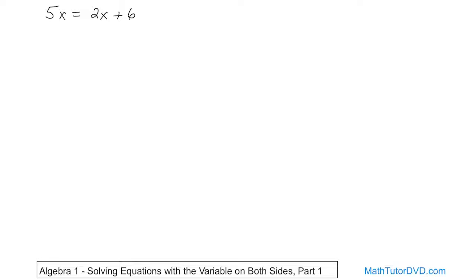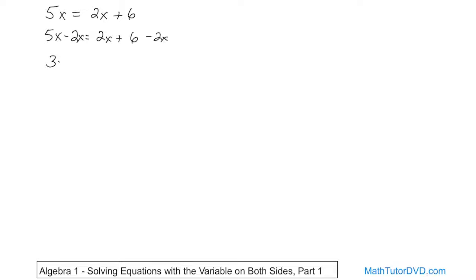So how do you proceed? Let's first try to move the 2x over here. Remember, the 2x is grouped as a unit — you can't just move the x by itself, you have to move the whole term. Since this is positive 2x, we'll move it by subtraction. So we have 5x equals 2x plus 6, and we'll subtract 2x from both sides. On the right-hand side, 2x minus 2x disappears. On the left-hand side, these are like terms, so 5x minus 2x is 3x.